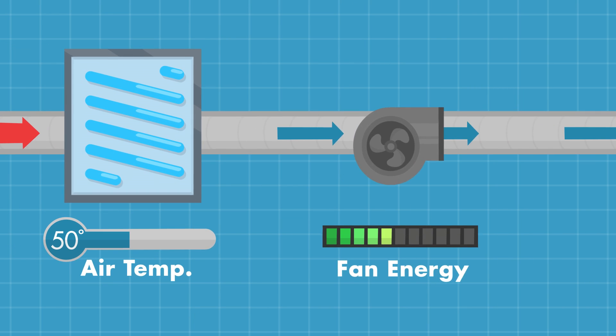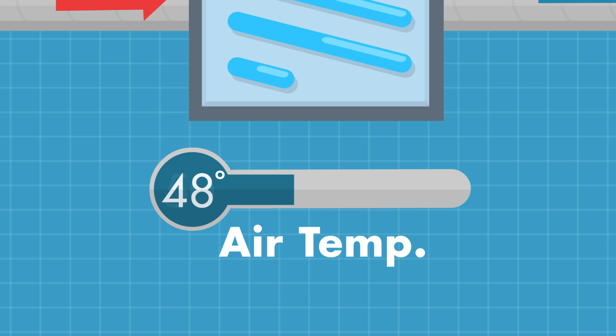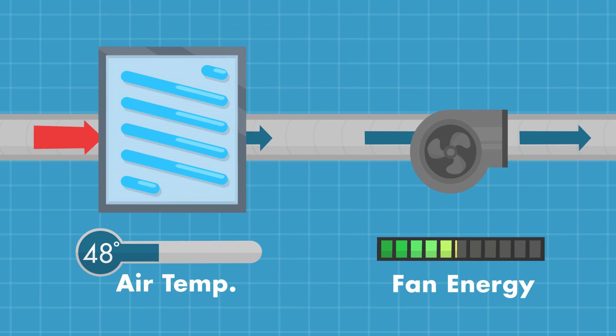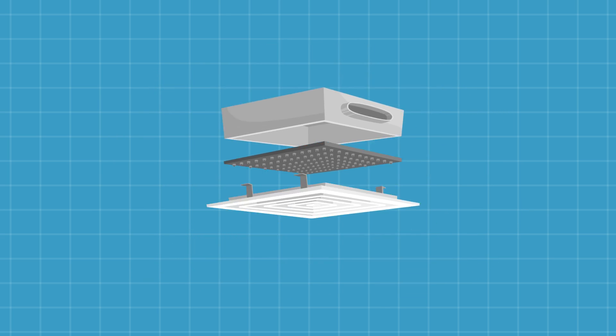With Dedenko infusers, Albert can also lower the primary air temperature even further, providing additional cooling without raising fan energy. And because infusers have no moving parts, Albert saves on maintenance costs.